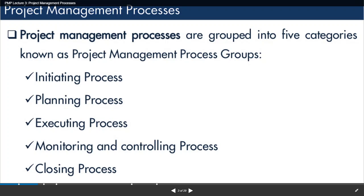In this video, let us see the project management process. The project management process are grouped into five categories, known as project management process groups. They are: initiating process, planning process, executing process, monitoring and controlling process, and closing process, which we can also call the terminating process.